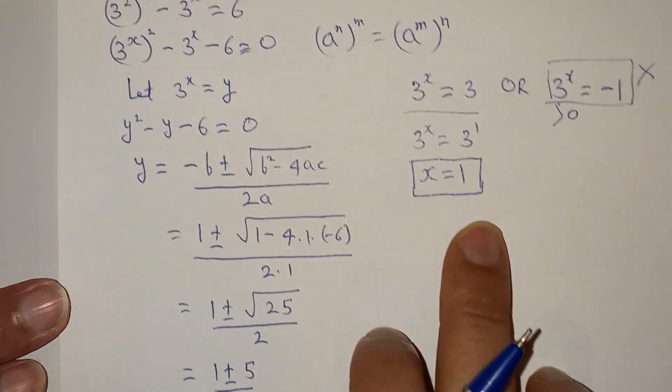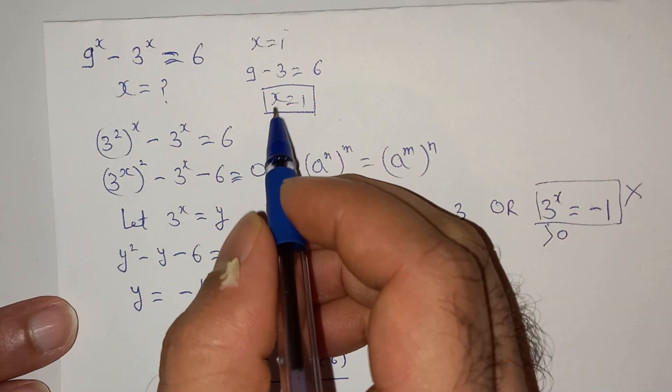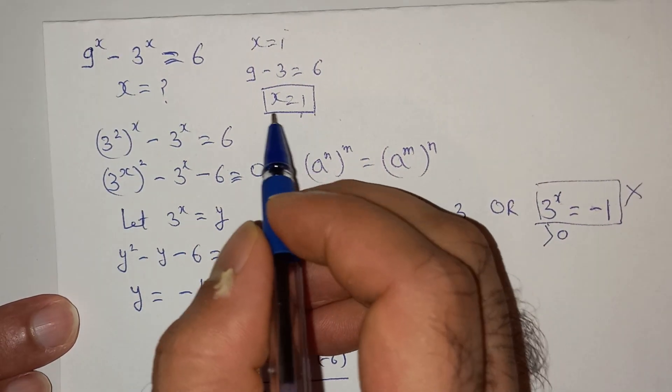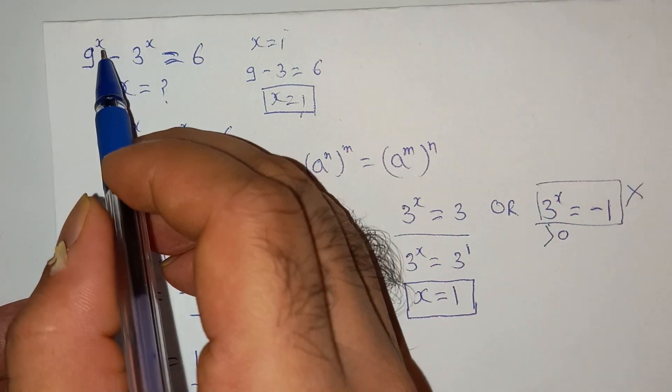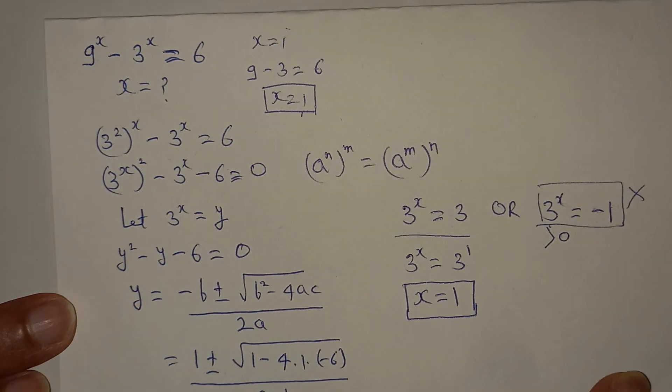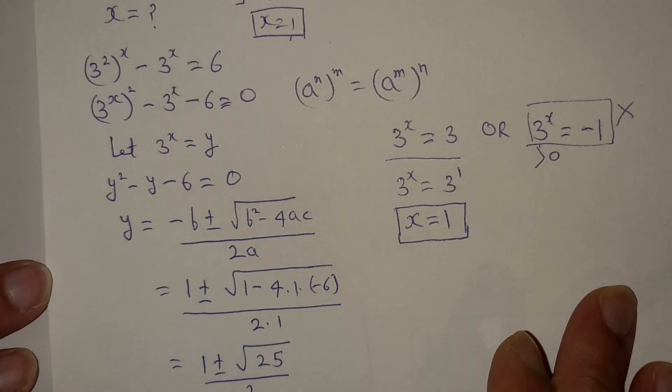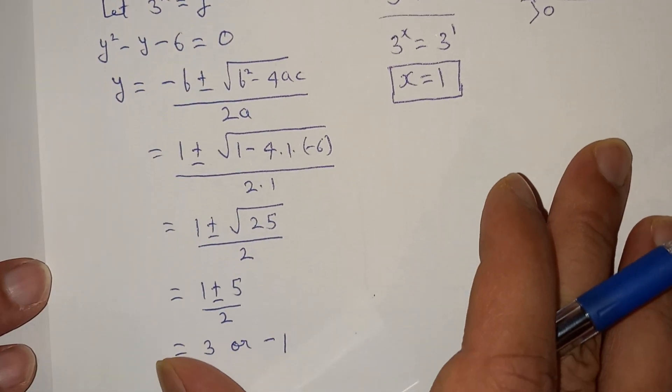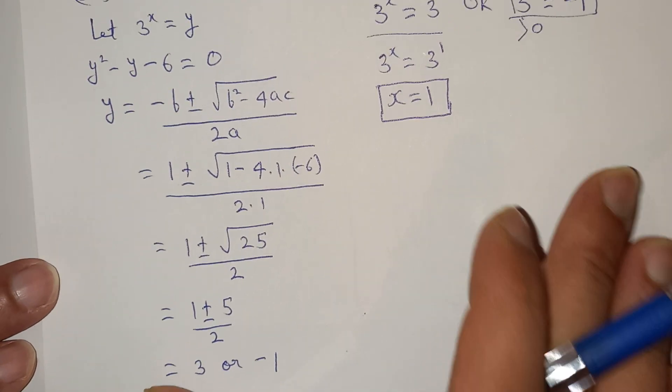And this is what we came up with as the answer initially, and you can check it by putting the value of x as well, which is 9 minus 3 equals to 6. I hope the solution was clear. Thank you for watching the video. Please don't forget to like and subscribe to the channel. See you later, bye.